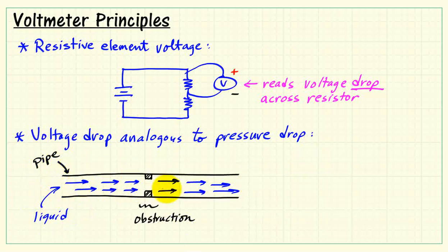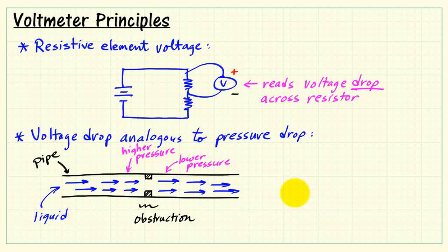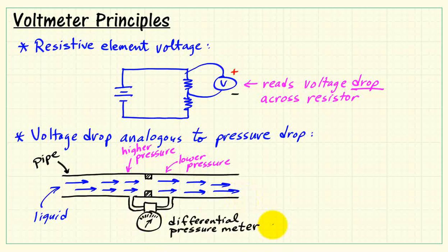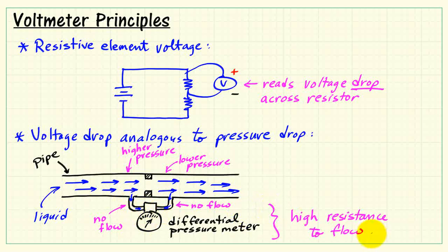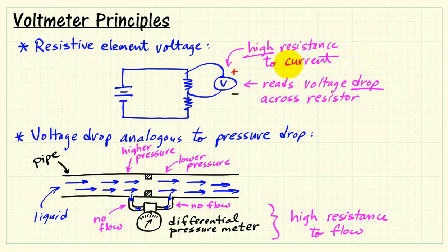This is analogous to a pressure drop in a pipe that's conveying liquid. If we have some kind of obstruction in the pipe, which is analogous to this resistor, we have higher pressure on one side of the obstruction and lower pressure on the other. We have instruments called differential pressure meters, and they have an inlet on both sides of the obstruction. Water does not actually move in those inlets, but it does convey the pressure to the meter — so no flow, but yet it's measuring the pressure difference or pressure drop across that obstruction. So again, we see that the meter has high resistance to flow. Likewise, the voltmeter has high resistance to current.